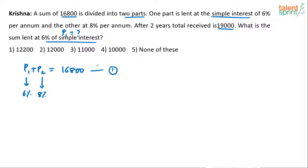What will be equation number two? P1 has 6% per annum interest, so in two years we get 12%. The total amount from P1 is 112% of P1.